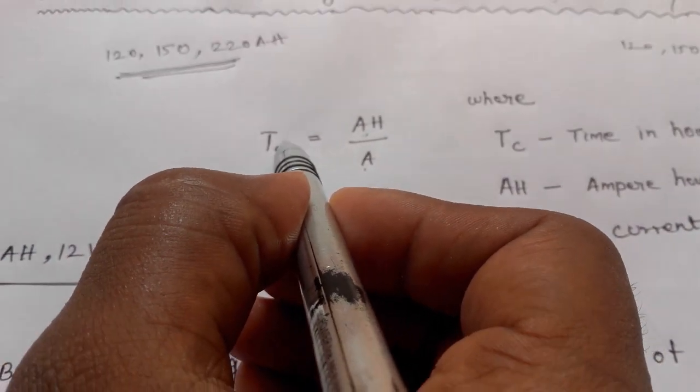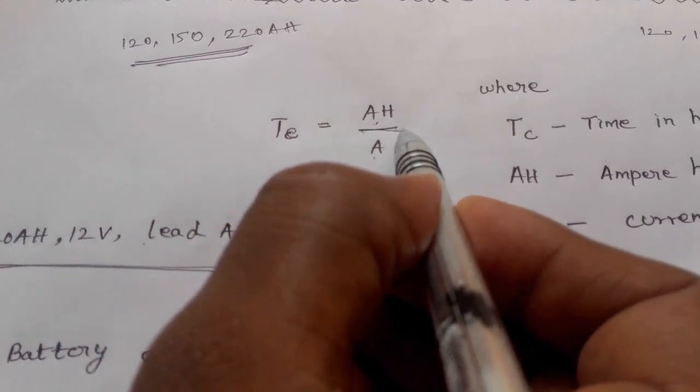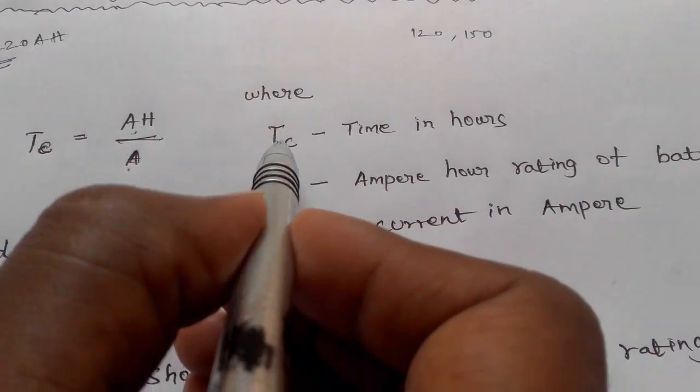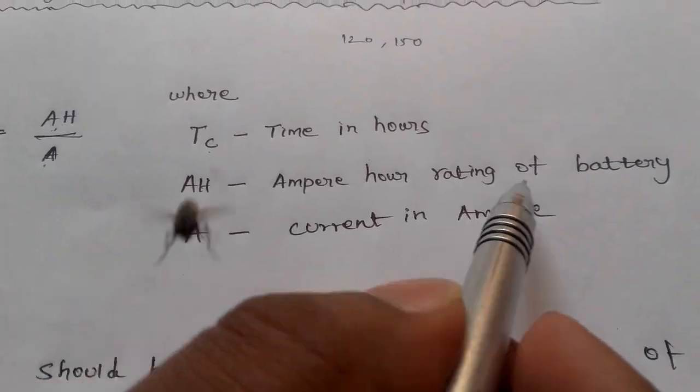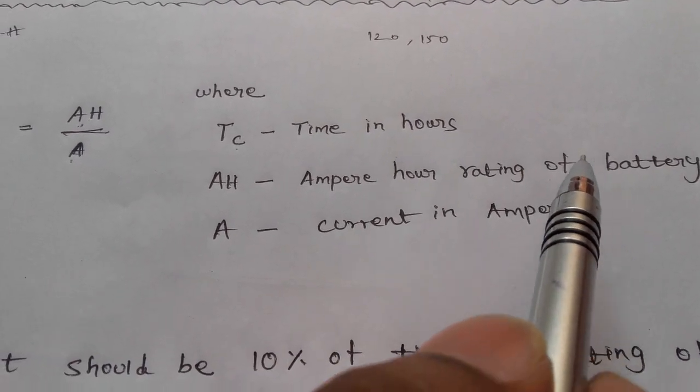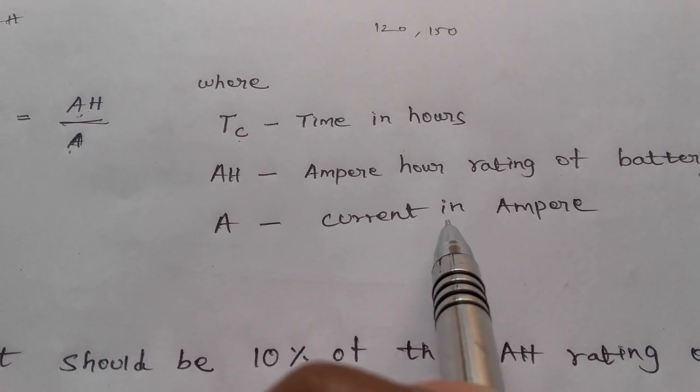There is a formula for charging time. Tc equals Ah divided by A. Where Tc is time in hours, Ah is ampere hour rating of the battery, and A is current in amperes.